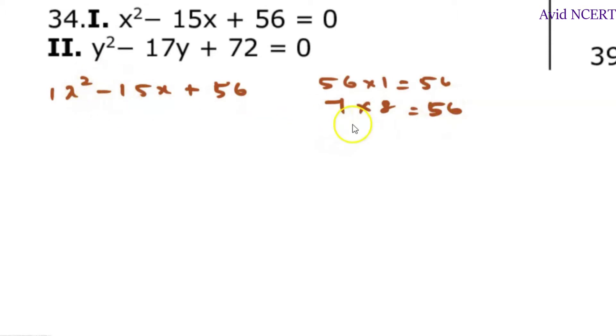Since we need minus 15, this is minus 7 minus 8 equals minus 15. So we're finding the equation which is x square minus 7x minus 8x plus 56. Taking the common term out, which is x minus 7 minus 8 into x minus 7. Minus into minus is plus,